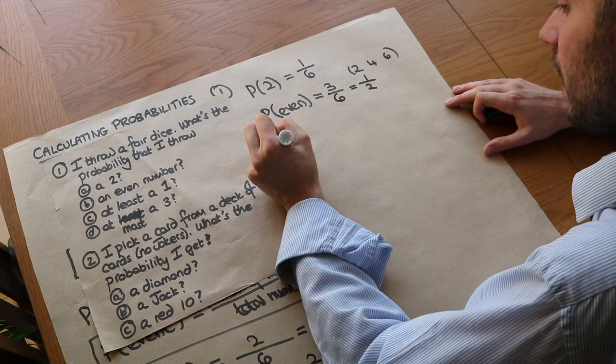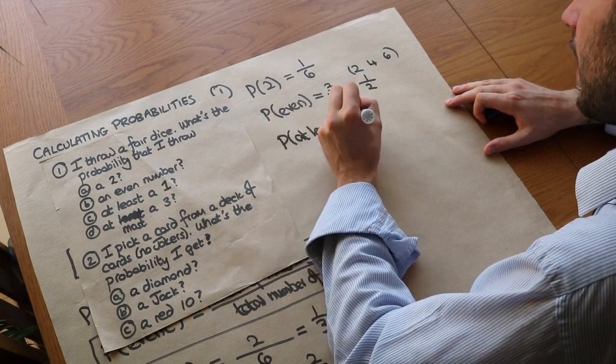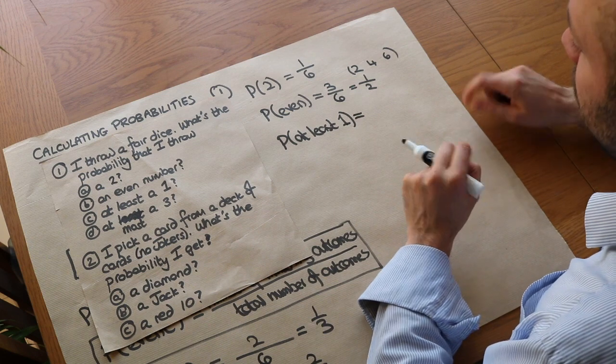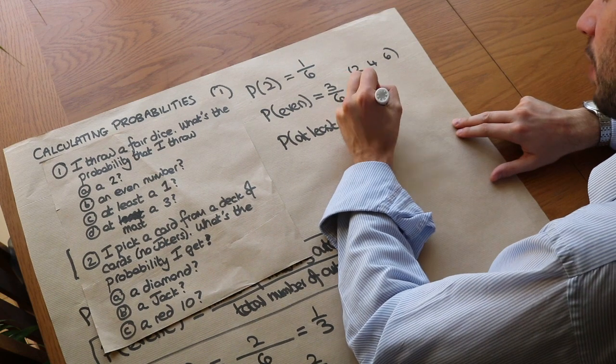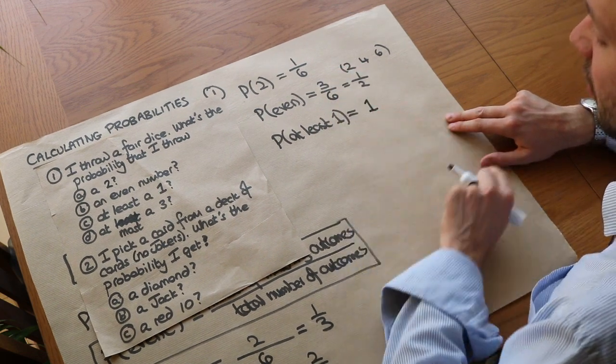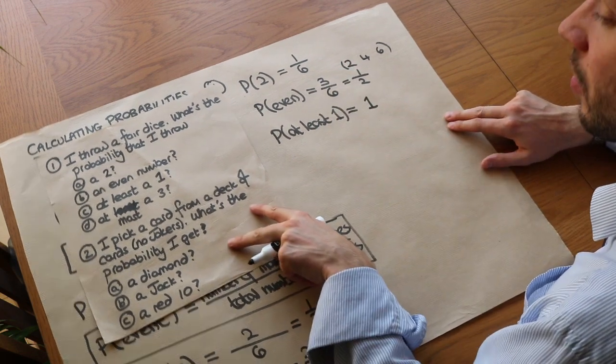What about the probability of at least a one? At least one includes one itself. So the number you could get is one, two, three, four, five or six. Well that's everything. So that's just going to be one. It was a trick question. It's absolutely certain that we get at least a one on a dice.